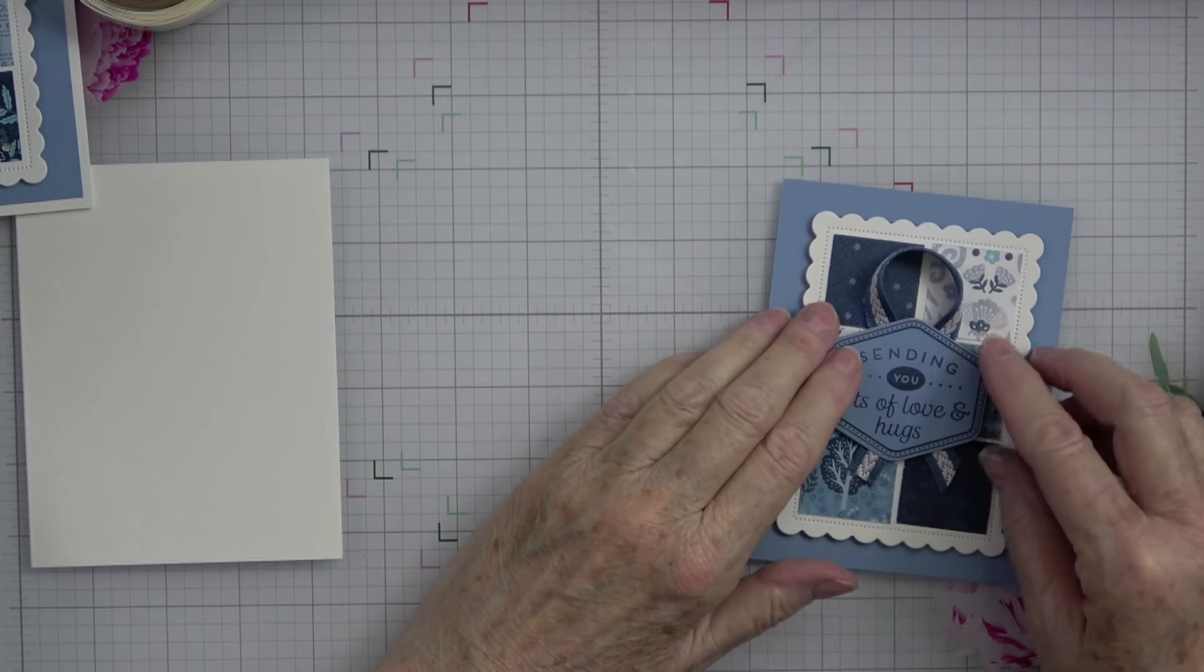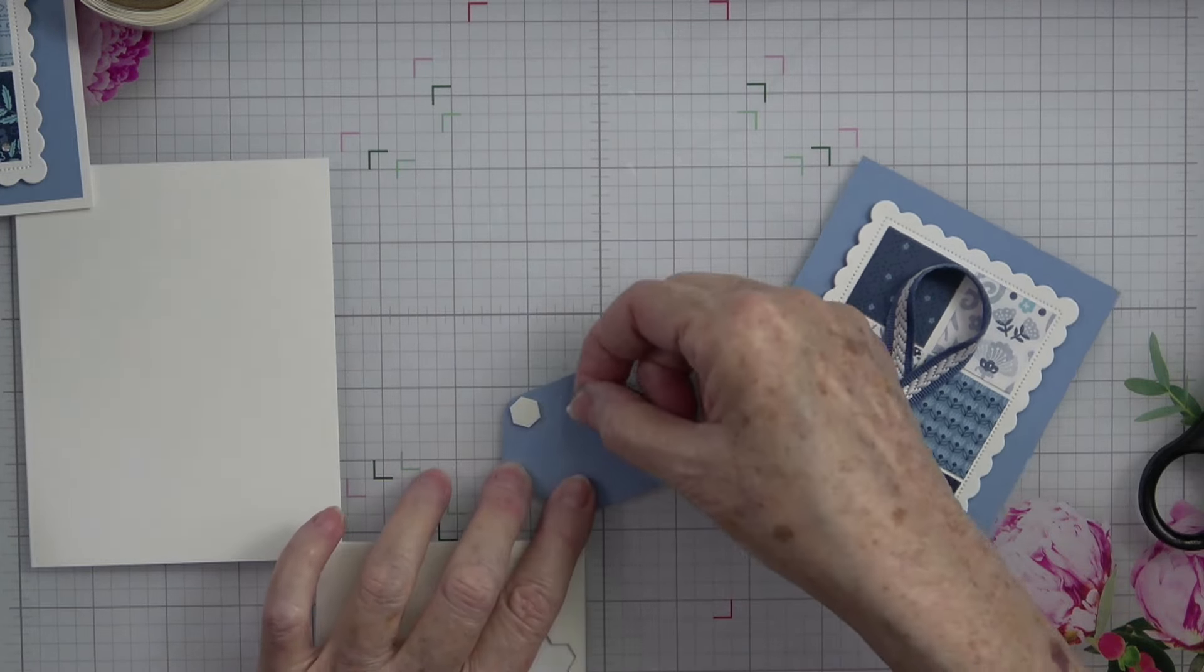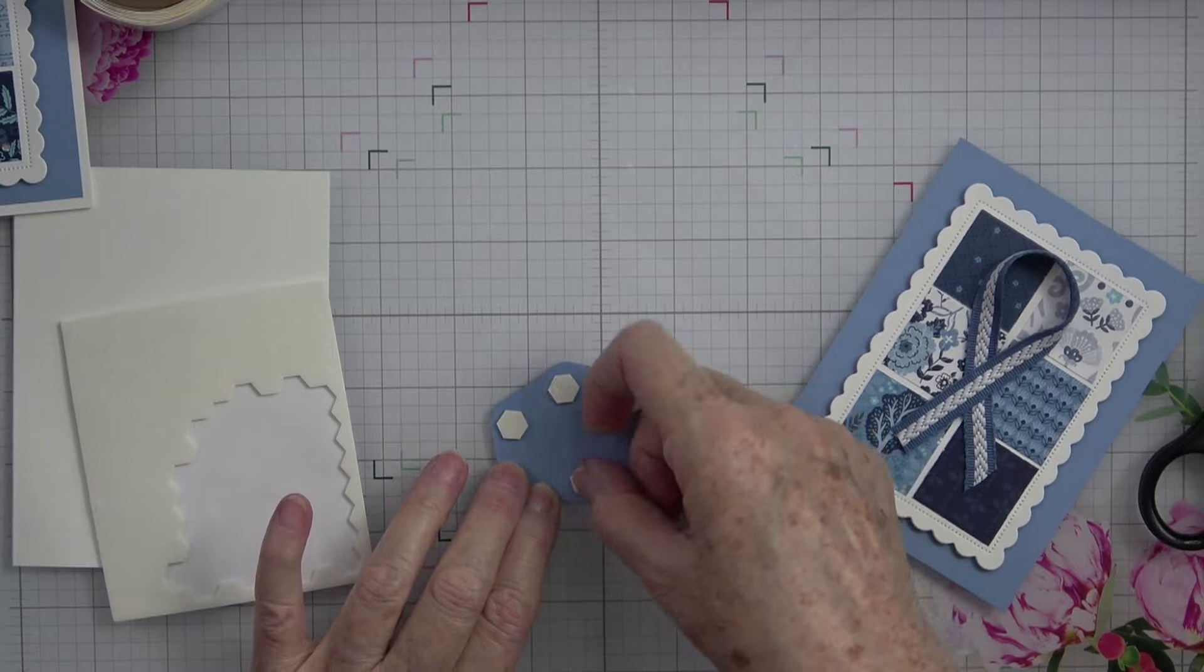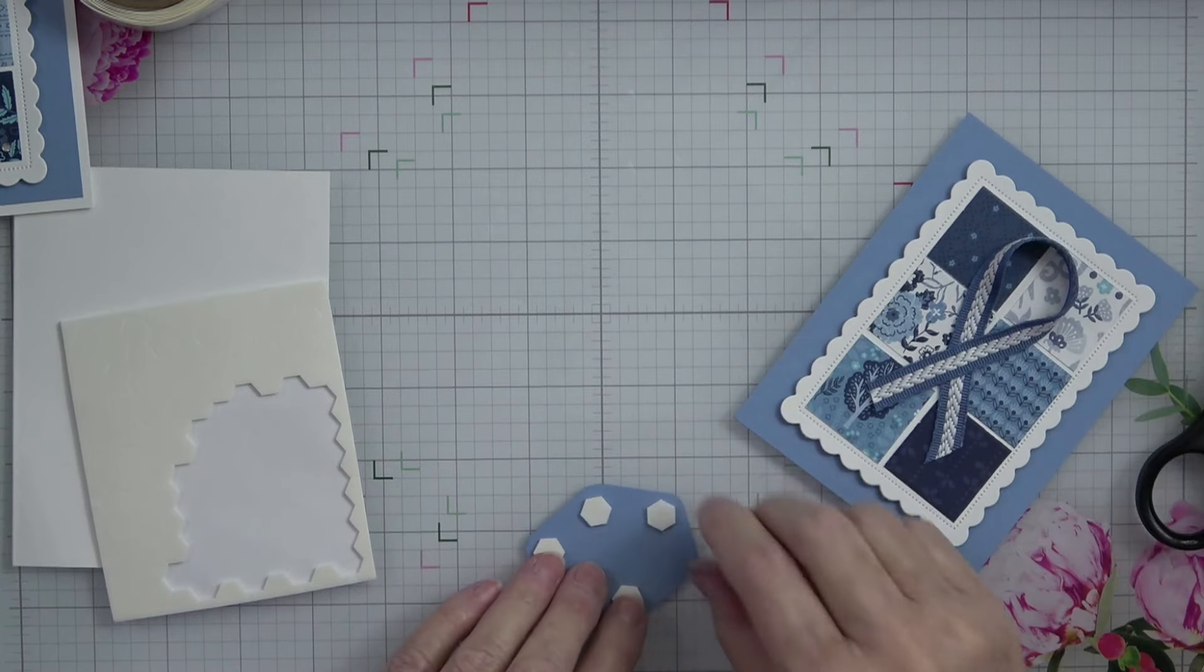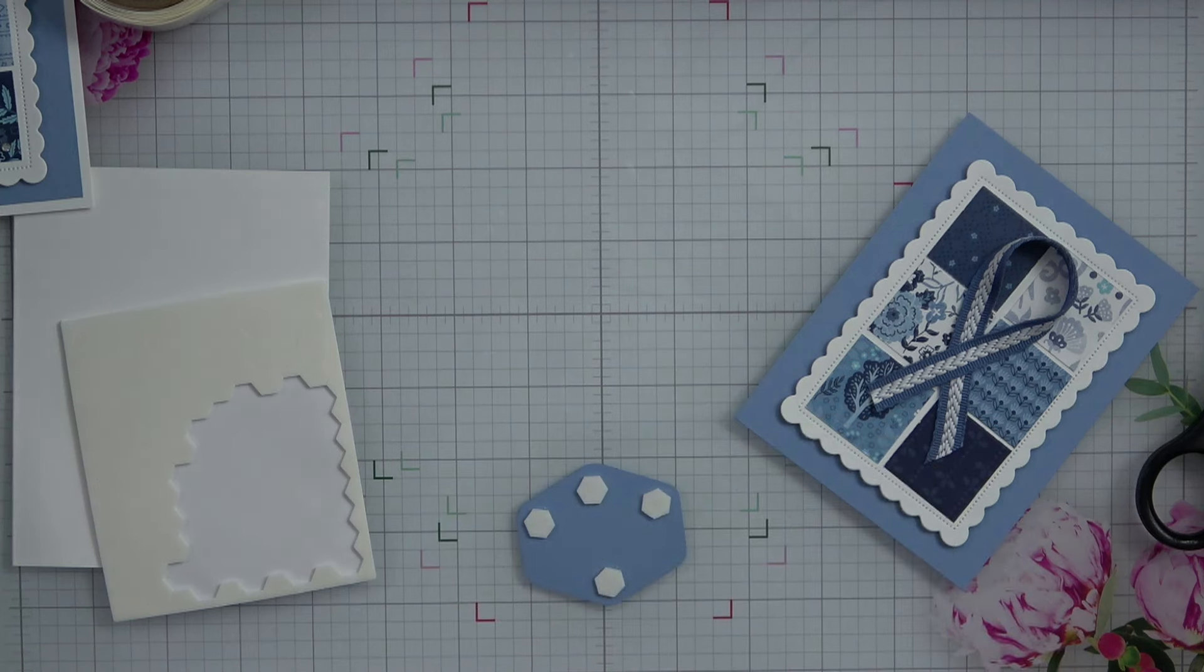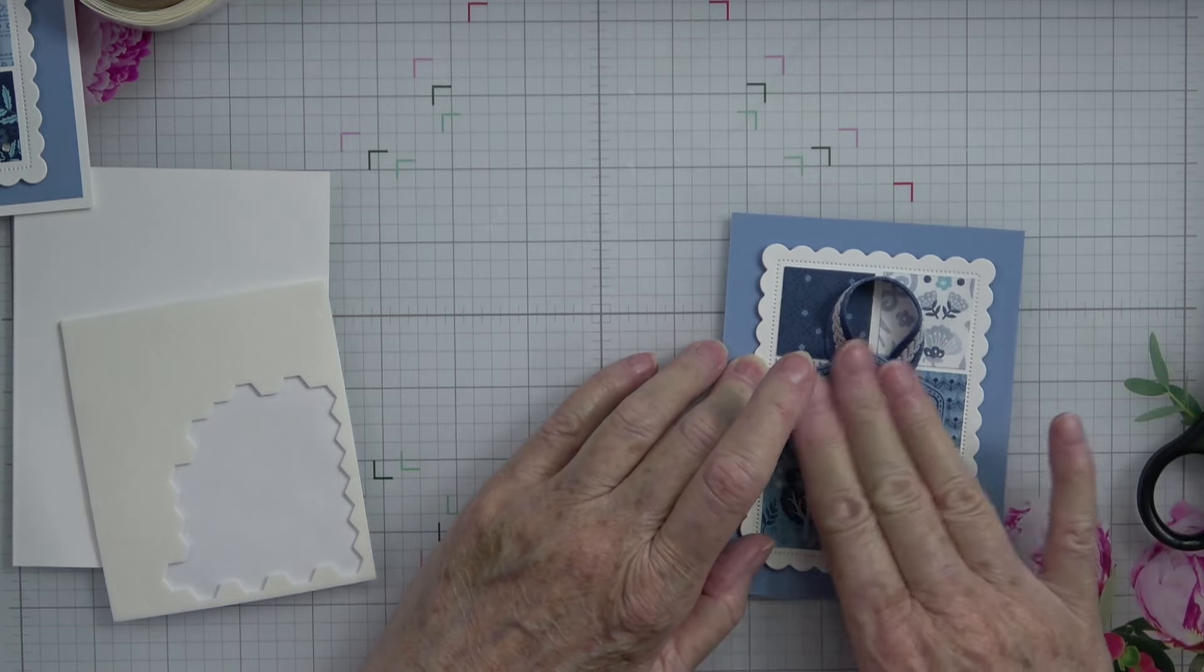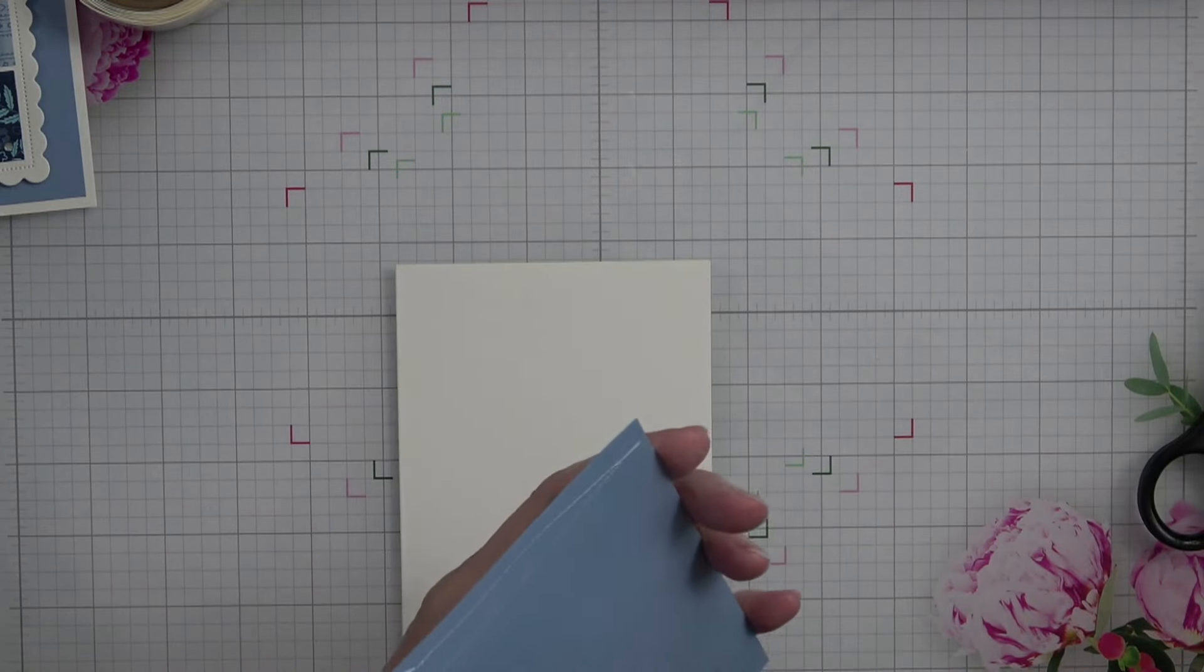And now we can put this on and all we have to do to put this on is pop it up with some dimensionals. I think right there is going to be pretty much it. We want to stick that out. So I'm going to pull the backers off of this and then set this down right about here. And now we're ready to glue this to our card base and this card is done all except putting a piece on the inside.